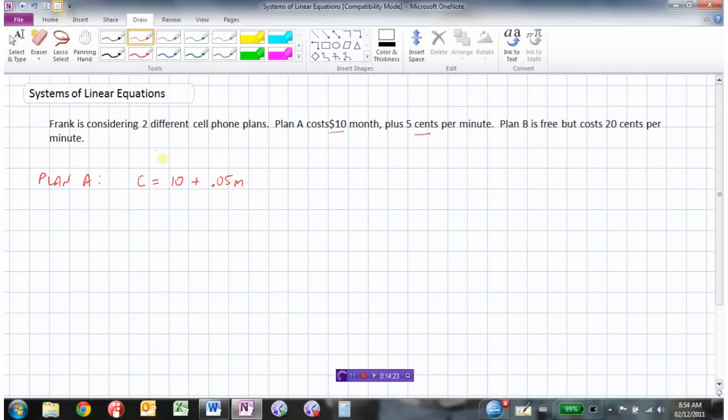And we'll use M for the number of minutes. So we should identify our variables here. Let M equal the number of minutes, and C equals the cost. So the cost for Plan A is $10 plus 5 cents per minute, 0.05 times M, the number of minutes.